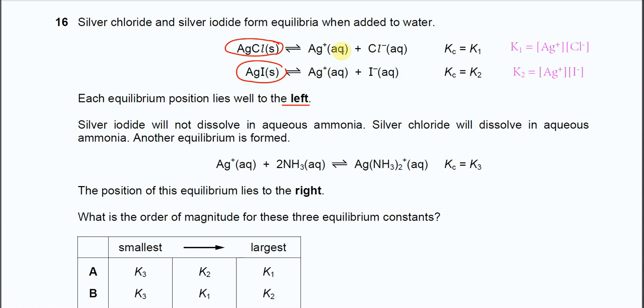Silver iodide will not dissolve in ammonia, but silver chloride can dissolve in ammonia solution. This gives you the hint that the solubility of the silver chloride is relatively higher than the silver iodide. This is the hint.